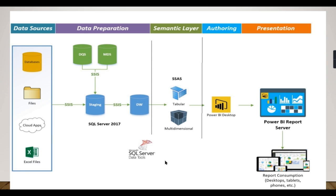Basically, using data tools we need to develop an SSAS tabular model and source it from a data warehouse, Excel, or any other source system. You need to store the model developed in data tools in the SSAS server. When you develop the model, you fetch some columns, remove certain columns, create calculations and measures — those structural changes are stored in the server, and that is called deployment. Once deployed, the structure is stored there and it reads the data from the data warehouse or source system, which is called processing.